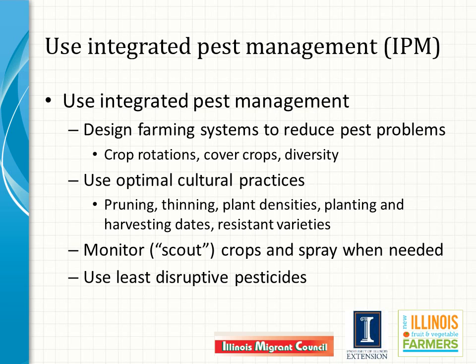I urge you to plan and design farming systems that minimize the likelihood of severe pest problems. Steps will include crop rotations, cover crops, plant diversity, tillage, pruning, thinning, ideal planting and harvesting dates, using resistant varieties, managing irrigation very well, and several other steps. IPM then involves monitoring crops to assess the densities of pests and beneficial organisms, or scouting, and using pesticides if needed. The least disruptive pesticides may be synthetic or they may be of natural origin, though synthetic products cannot be used in organic production.